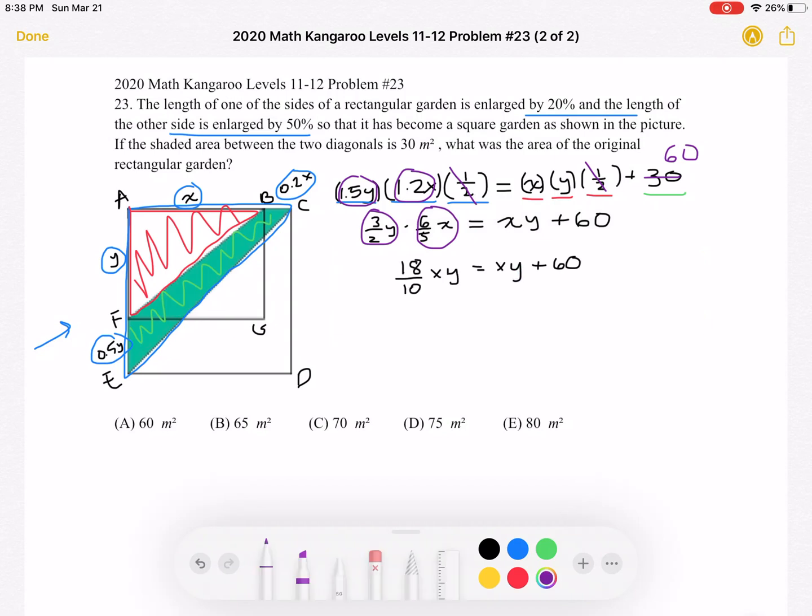So now, we want to multiply 3 halves times 6 fifths in order to get 8 over 10XY is equal to XY plus 60. Our next step is to subtract XY from both sides, which will give us 8 tenths XY is equal to 60.